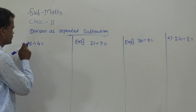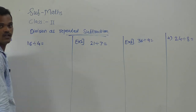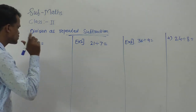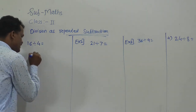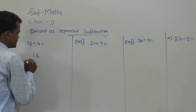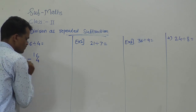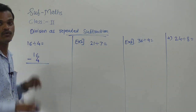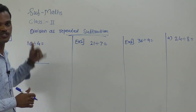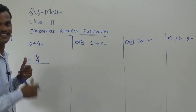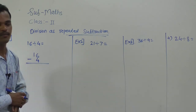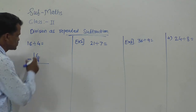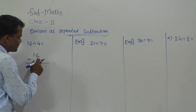Here, 16 is the dividend and 4 is the divisor. Write the dividend and subtract the divisor from 16. Every time you have to subtract 4 until 0 comes as the remainder. So, 16 minus 4.